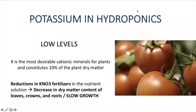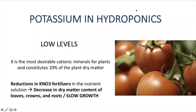If your source of potassium — for example, potassium nitrate — is lower than the recommended levels for a specific crop, you will have a general decrease in dry matter. You will have fewer leaves, less dry matter for crowns and roots, and in general the plant will have slower growth.